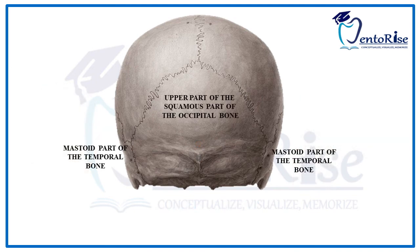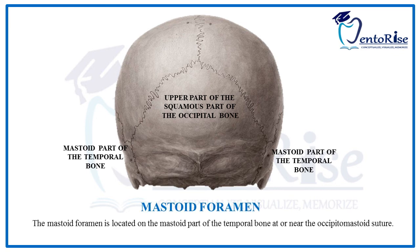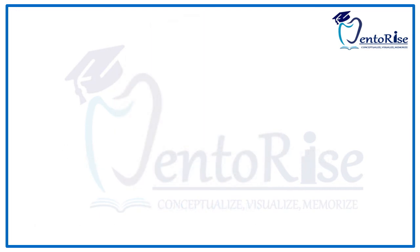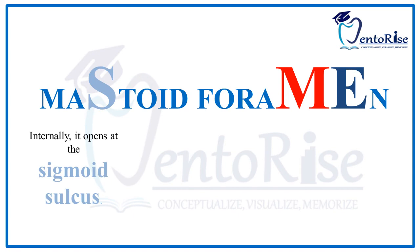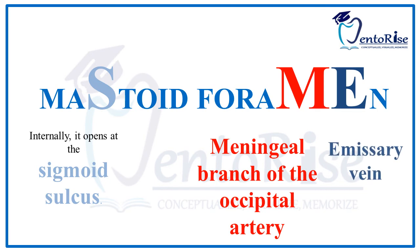The next feature is the presence of the mastoid foramen. The mastoid foramen is located on the mastoid part of the temporal bone at or near the occipitomastoid suture, marked in the figure with a red arrow. Three structures pass through the mastoid foramen: internally it opens at the sigmoid sulcus, and the meningeal branch of the occipital artery and the emissary vein also pass through the mastoid foramen.